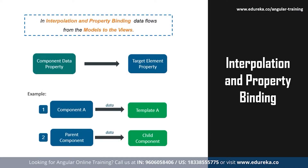Now talking about property binding: in property binding, the value flows from a component's property into the target element's property. Property binding can be used to read or pull data from the target elements or to call a method that belongs to that target element. The events raised by the element can be acknowledged through event binding, which will be covered later. In general, the component property value will be set to the element property using property binding.